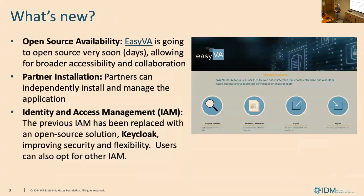So what's new in ECV8? It's about open source availability. ECV8 is going to open source very soon — we're talking about days. This allows for broader accessibility and collaboration. For partner installation, partners can independently install and manage their application. We also replaced the identity and access management in ECV8 with an open source solution called Keycloak, improving security and flexibility. Users can also choose to use other IAM solutions as well.